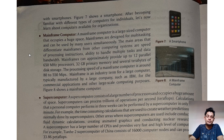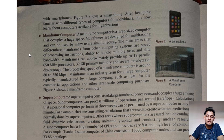Next we see mainframe computer. A mainframe computer is a large-sized computer that occupies a huge space. Mainframes are designed for multitasking and can be used by many users simultaneously. The main areas that differentiate mainframe from other computing systems are speed of processing instructions, ability to handle multiple tasks, and data bandwidth. Mainframes can approximately provide up to 12 parallel 650 MHz processors and 32 GB primary memory.